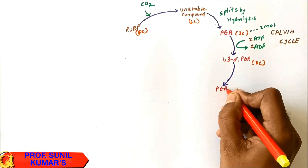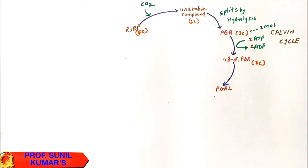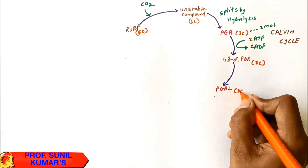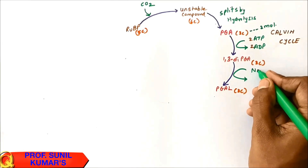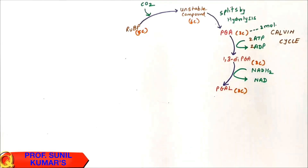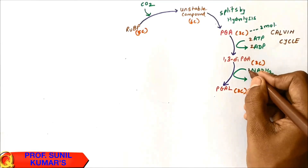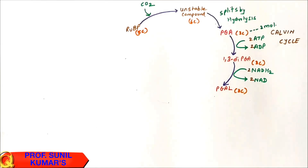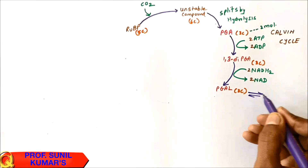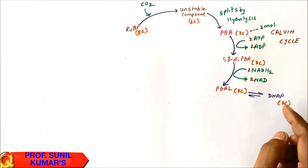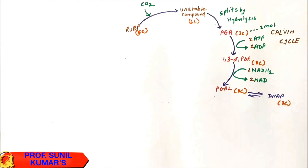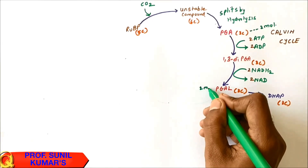1,3-diPGA now undergoes reduction. Reduction means addition of hydrogen — NADH2 is converted to NAD, and the hydrogen released is added to 1,3-diPGA, forming PGAL (phosphoglyceraldehyde), a three-carbon compound. DHAP, the isomer of PGAL, is slightly less stable and gets isomerized to PGAL, giving two molecules of PGAL.